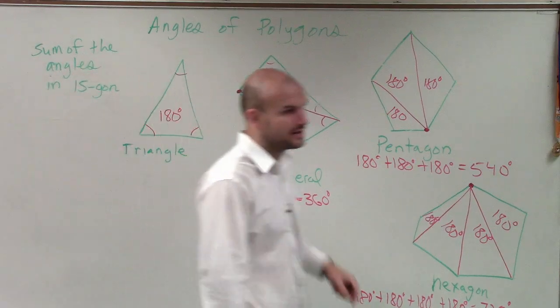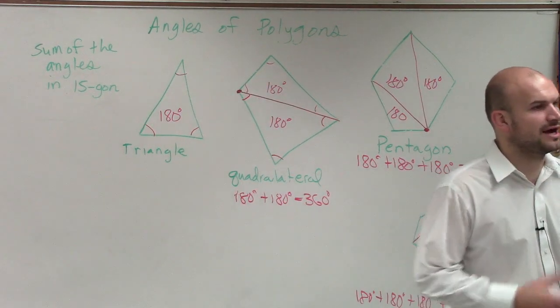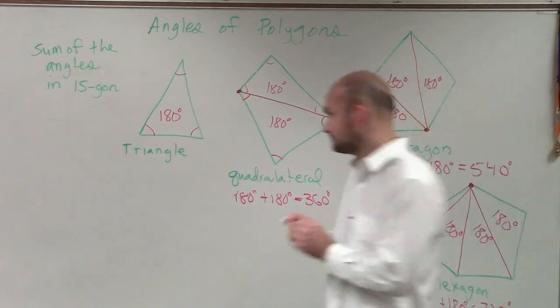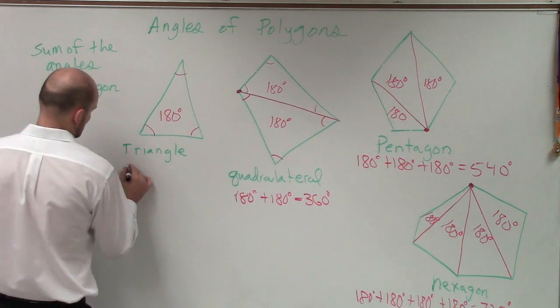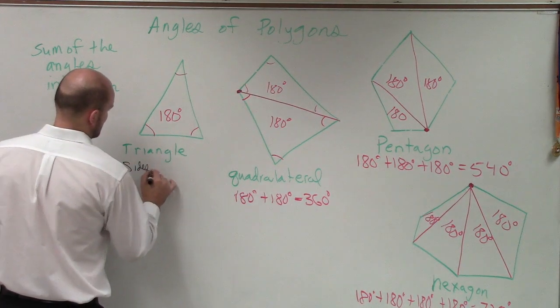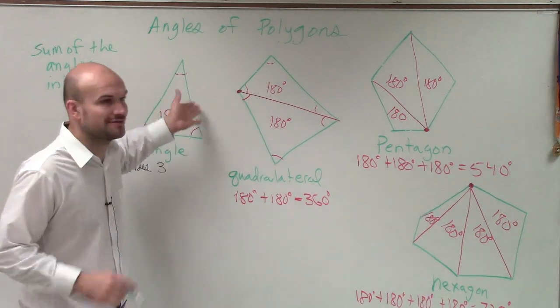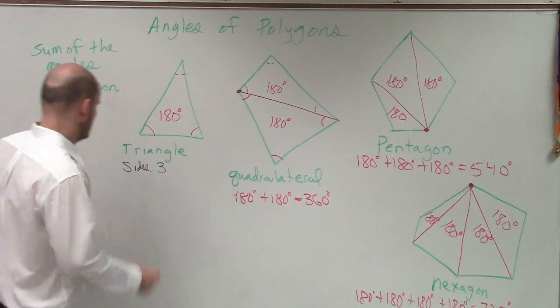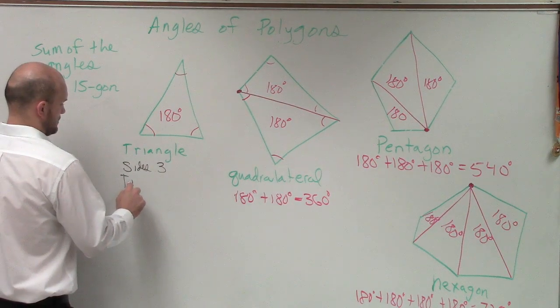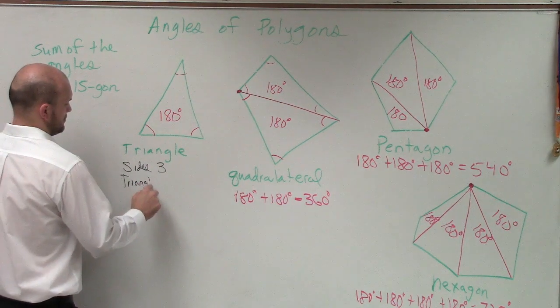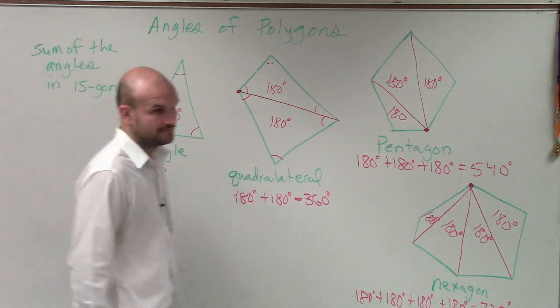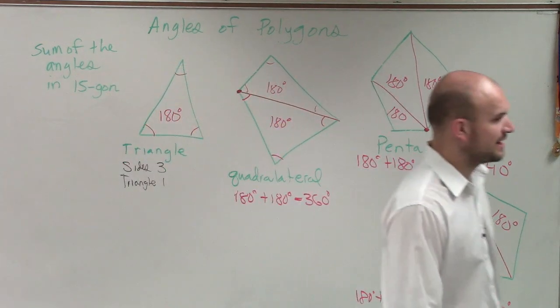All right, so let's go and look at the triangle. Sam, how many sides does the triangle have? Three. How many triangles does it have? How many triangles are actually inside of a triangle? One. OK. And therefore, the sum is 180, right?